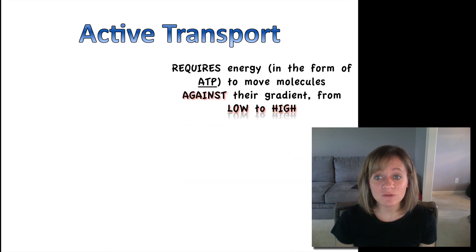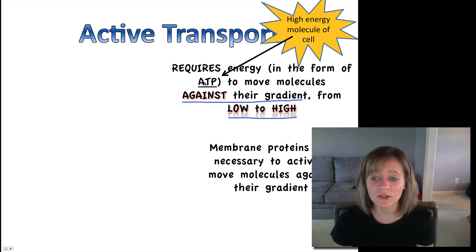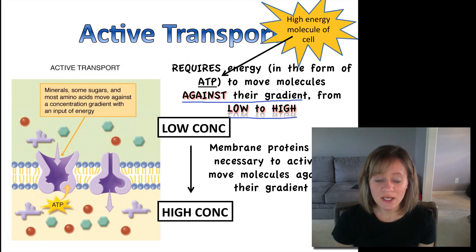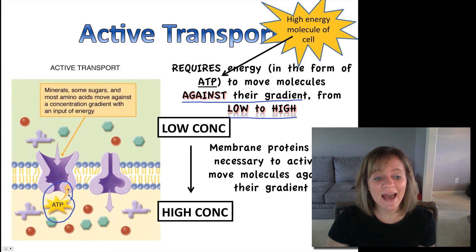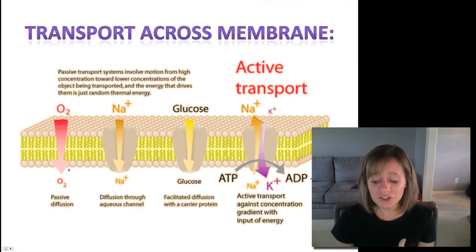Now another type of transport is active transport. And this requires energy because you're moving molecules against their gradient. Not from high to low, but now we're moving them from low to high. So this requires this ATP energy molecule. That's the high energy molecule of the cell. And again, just like with facilitated diffusion, membrane proteins are necessary to do this. So here we have something that's in low concentration outside the cell and it needs to get inside. But it's going to go from low to high. So it needs ATP energy to do that. So ATP activates this protein to open it up and then it brings in these solutes inside of the cell. So that's active transport.